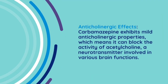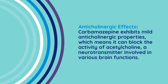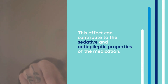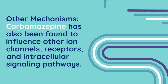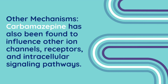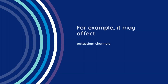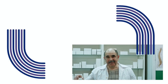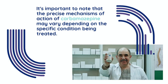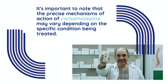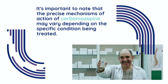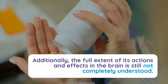Anticholinergic effects: carbamazepine exhibits mild anticholinergic properties, which means it can block the activity of acetylcholine, a neurotransmitter involved in various brain functions. This effect can contribute to the sedative and antiepileptic properties of the medication. Other mechanisms: carbamazepine has also been found to influence other ion channels, receptors, and intracellular signaling pathways — for example, potassium channels, GABA receptors, and protein kinase C. The precise mechanisms of action may vary depending on the specific condition being treated, and the full extent of its actions in the brain is still not completely understood.